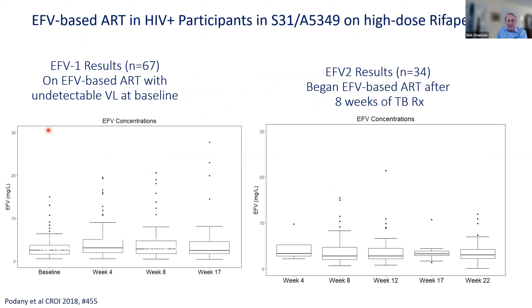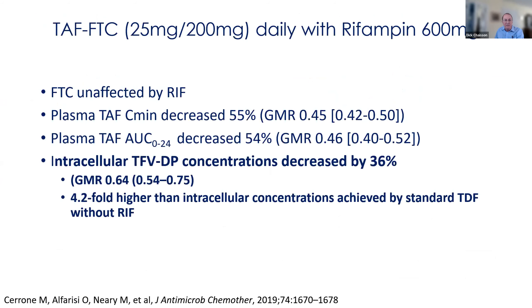In Study 31, people treated with efavirenz — either already on it at TB diagnosis or who started eight weeks after beginning TB therapy — showed absolutely no effect of high-dose rifapentine on efavirenz exposures. So this is a recommended regimen. For using TAF-FTC with rifampin, this pharmacokinetic study showed rifampin had no effect on FTC, but there was a marked decline in plasma TAF levels and the AUC was reduced by about half.